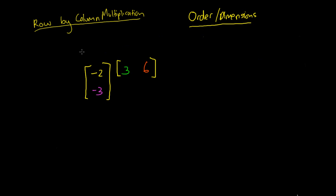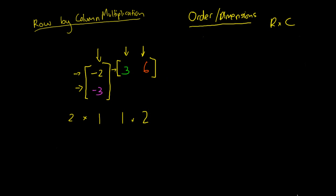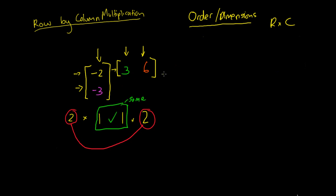First we need to check that we can actually multiply the matrices, using our R by C rule. Our first matrix has two rows and one column — so it's a two by one. Our second matrix has one row and two columns — so it's a one by two. We check the inner two values: both are one, so they match. The outer values are two and two, so our resulting matrix is going to be a two by two matrix.